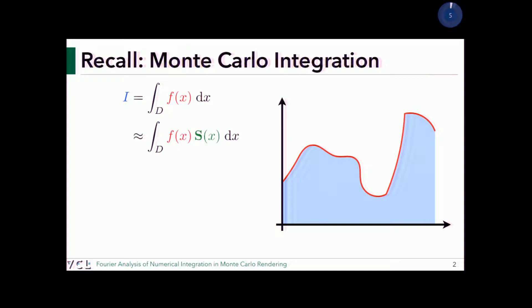We want to calculate the area, and these sampling patterns are going to be essentially an integral multiplied by some sampling function. It's very similar to the reconstruction thing, but yesterday we didn't see this for integration. Remember we looked at aliasing yesterday: the sampled signal is a product of the sampling function and so on.